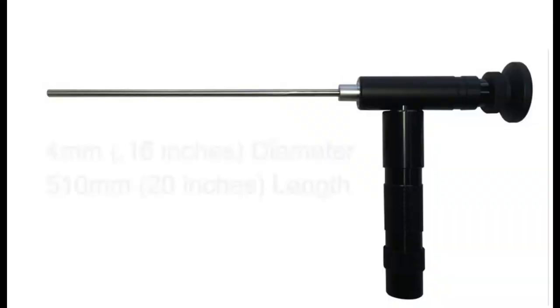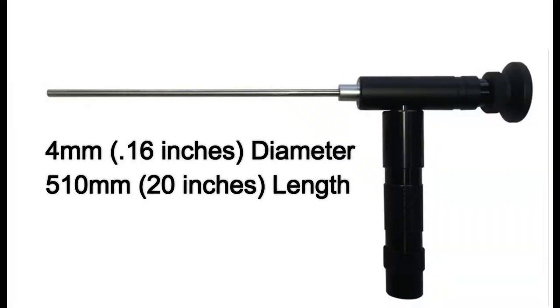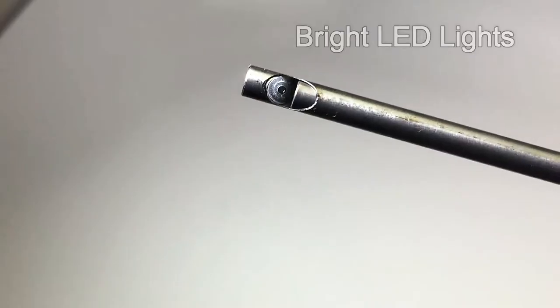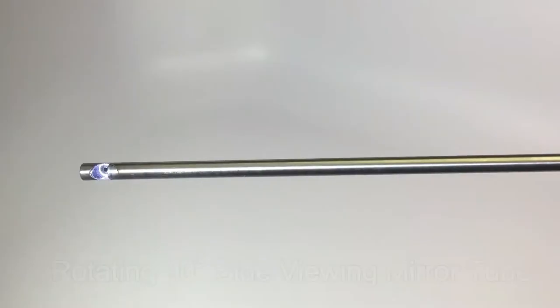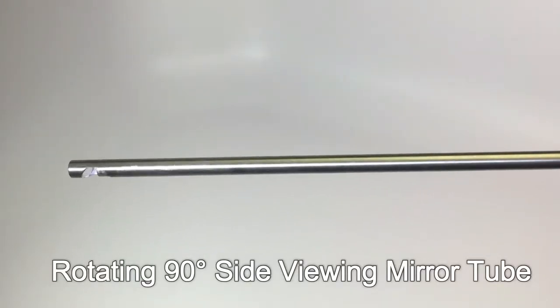This optical fiber boroscope features a 4mm diameter, 510mm length probe, bright white LED lighting, and a rotating side mirror attachment.